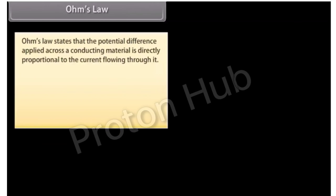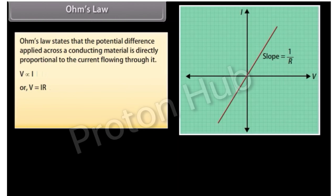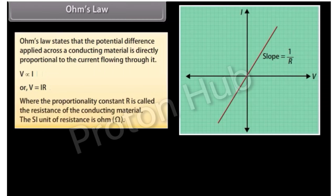Ohm's law states that the potential difference applied across a conducting material is directly proportional to the current flowing through it. V is directly proportional to I, or V is equal to IR, where the proportionality constant R is called the resistance of the conducting material. The SI unit of resistance is Ohm.